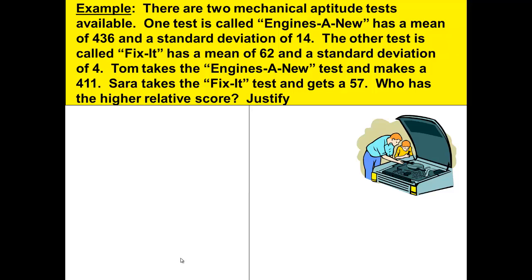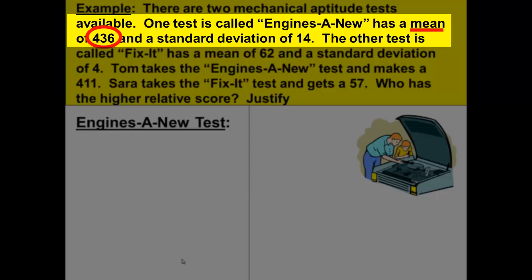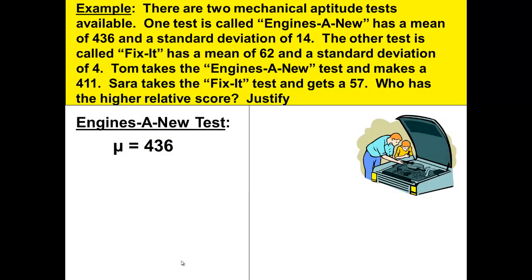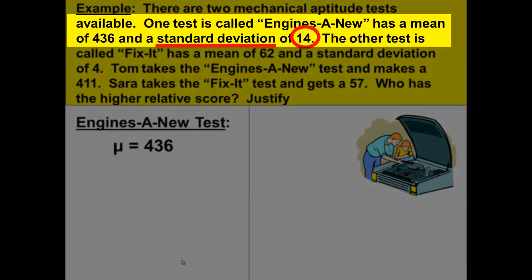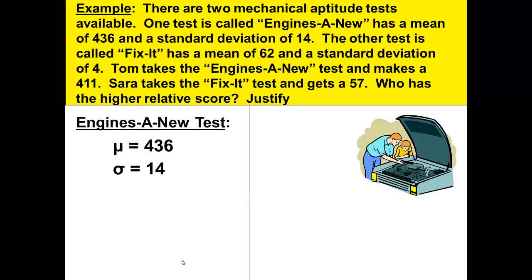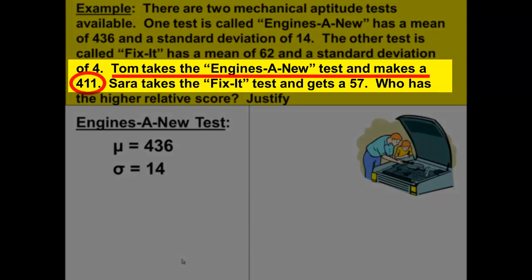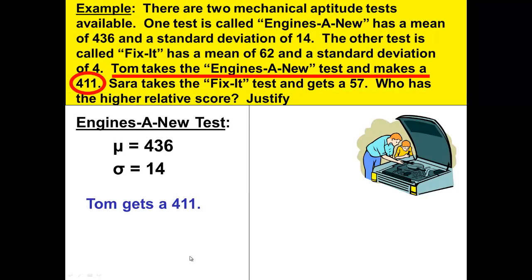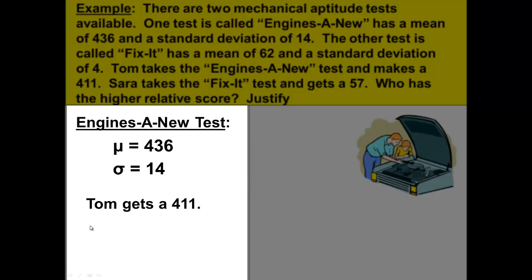As we do the problem, we want to look at each test separately, organizing our data so our numbers do not get confused. First, the Engine-A-New test: the mean is 436, the standard deviation is 14, and Tom's score on this test is 411. We've organized that information all together.